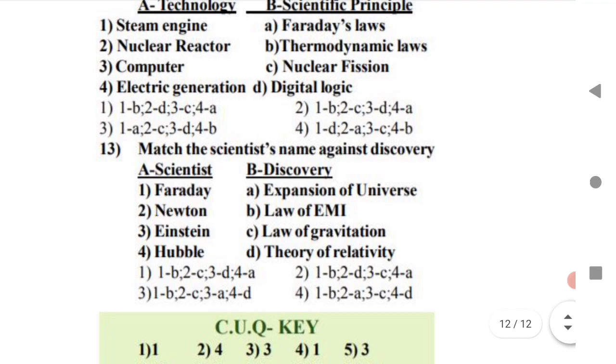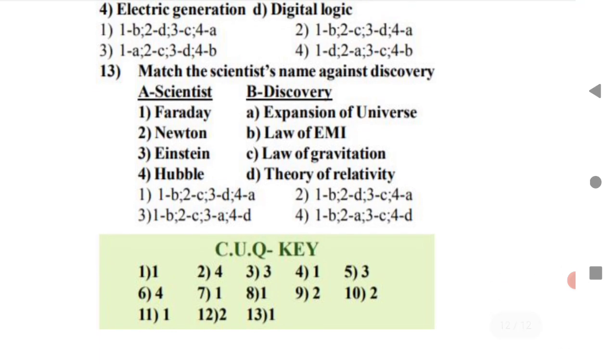Next is name the scientist and the discovery. Sometimes they will ask you what discovery made by Faraday. The option should be Faraday. He discovered law of EMI. Newton law of gravitation. Einstein, you know about Einstein.